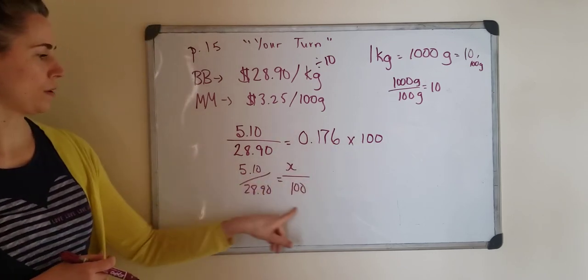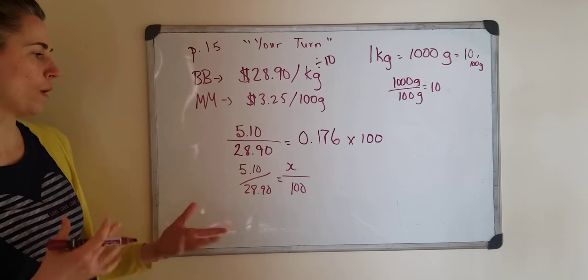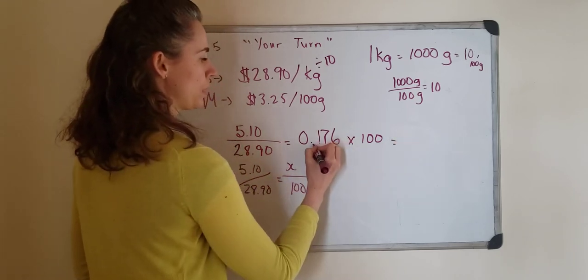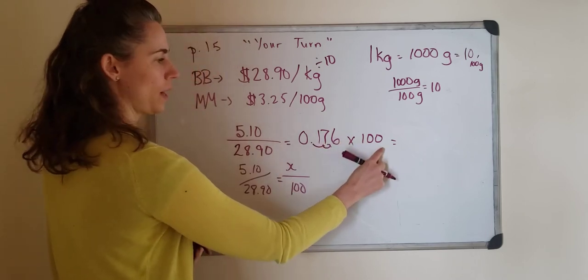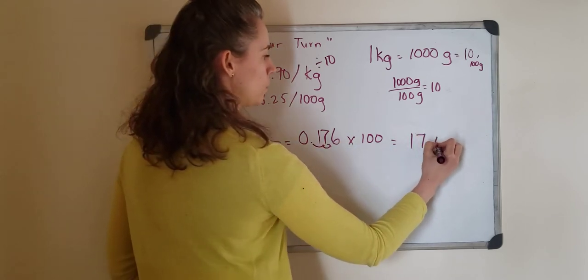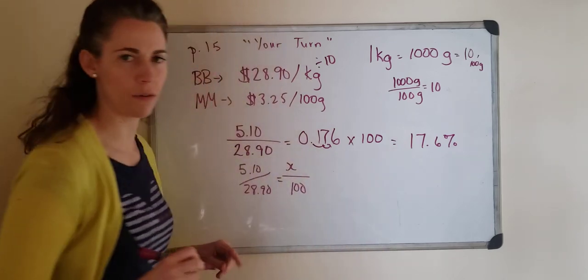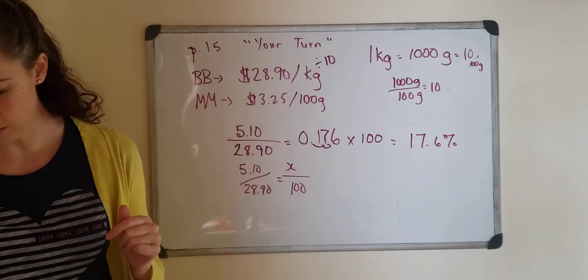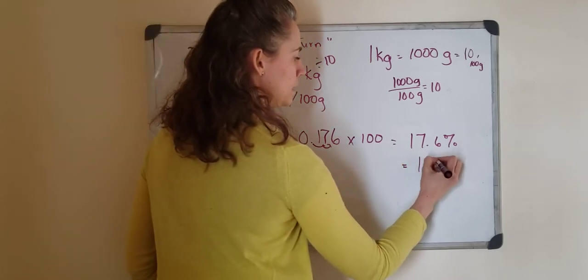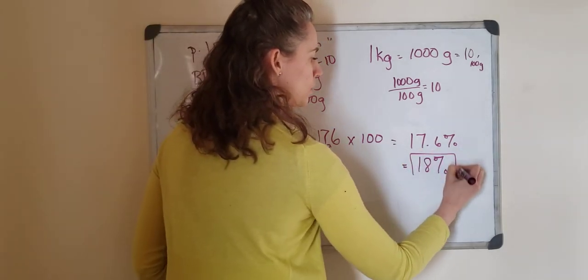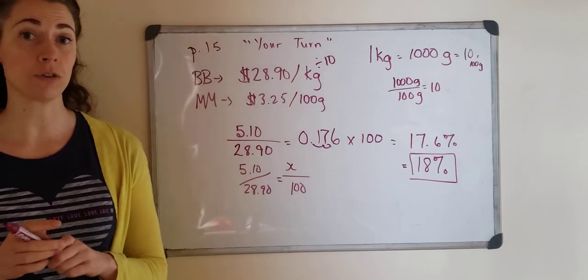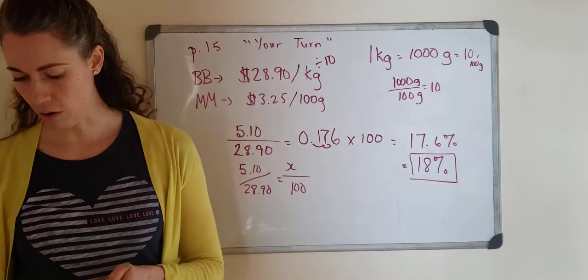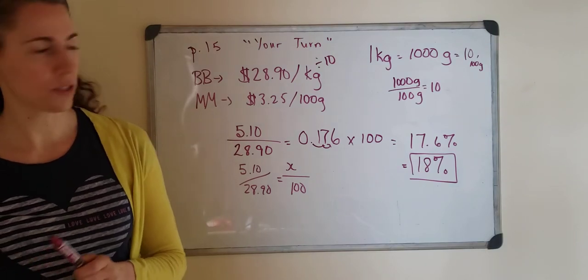Once you do this a bunch of times you just know you need to multiply by 100. But this is why you can look at that because you're trying to solve for what is this amount if it was out of 100. So then you would move the decimal two places right when we're multiplying by 100 and you get 17.6 percent. They said to round to the nearest percent so we would round that off to 18 percent. So it's an 18 percent increase in the price. That's your answer for C.